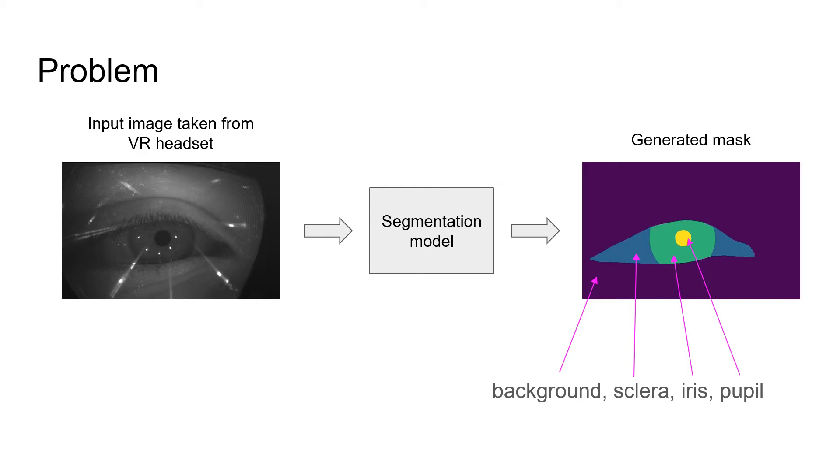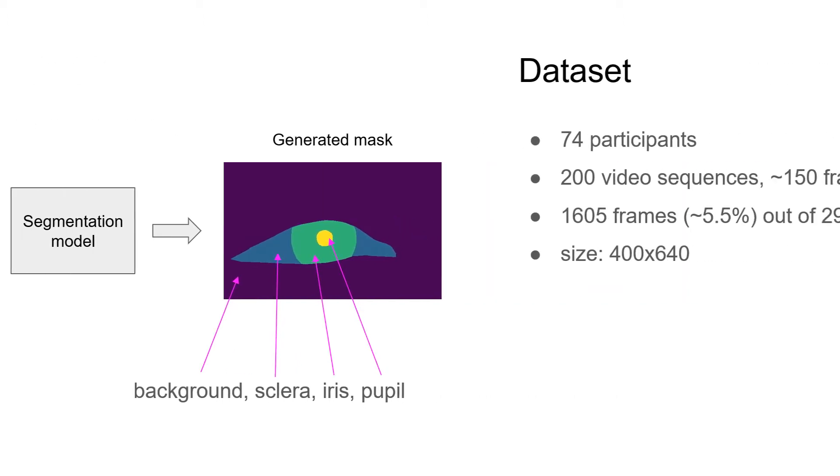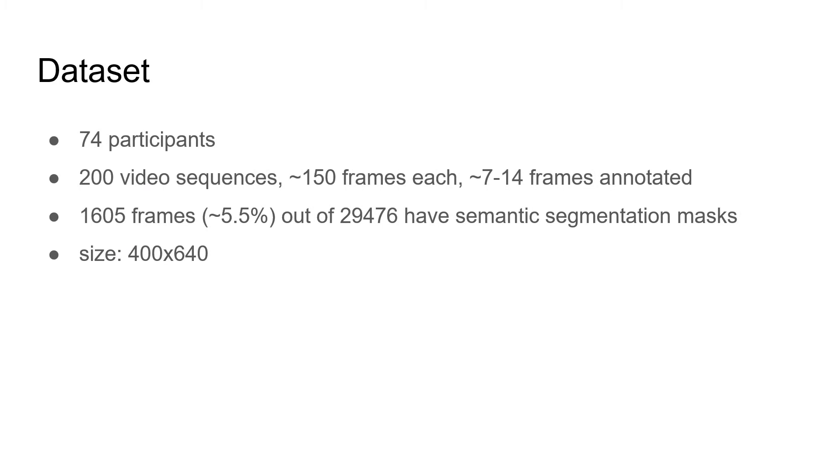The dataset was collected from 74 unique participants and contained 250 sequences. Each sequence has approximately 150 frames where about 7 to 14 frames are annotated and have semantic segmentation masks. In total, we have 1605 frames labeled out of about 29.5 thousand frames. Each image has size 400 by 640 pixels.